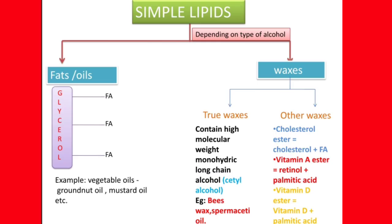As we know, simple lipids contain alcohol plus fatty acid. Now, depending on the type of alcohol present in the simple lipids, they are again subclassified into fats or oils and waxes. The main difference between fats and oils is that fats are solids at room temperature, whereas oils are liquids at room temperature.